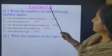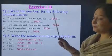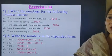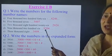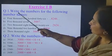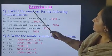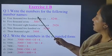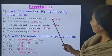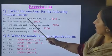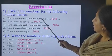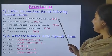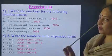Now let's do Exercise 1, part 1D. You can see this exercise from here and do it in your notebook. Question number 1: write the numbers for the following number names. First is 4,246. In 1000's place we have 4,000, so we write 4. In 100's place we have 200, so we write 2. In 10's place we have 40, so we write 4. In 1's place we have 6. The number is 4,246.